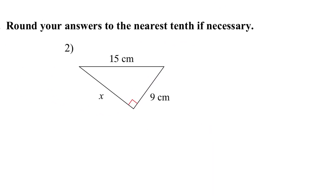Number 2. Again, my hypotenuse is 15. So I got X squared plus 9 squared equals 15 squared. We got X squared plus 81 equals 225. By subtracting 81 on both sides, I got that X squared equals 144. And then the square root on both sides, I got that X equals 12.